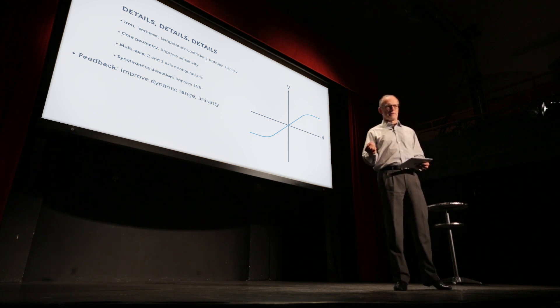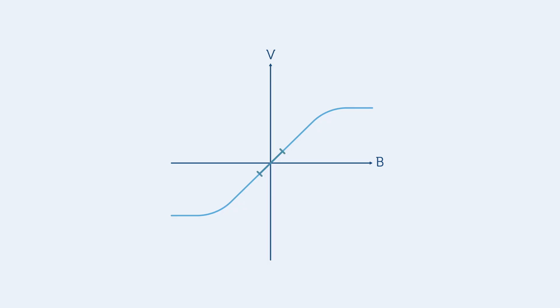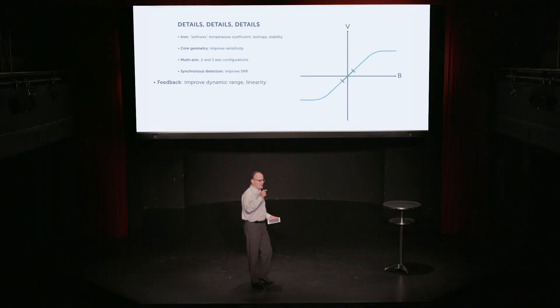Now, one way of addressing that is to use the flux gate sensor in a feedback loop that drives a current that offsets the actual field, the external field. So the sensor is always measuring something around zero, exactly in its linear region, and the actual measurement is what the current source is driving to offset the external field.